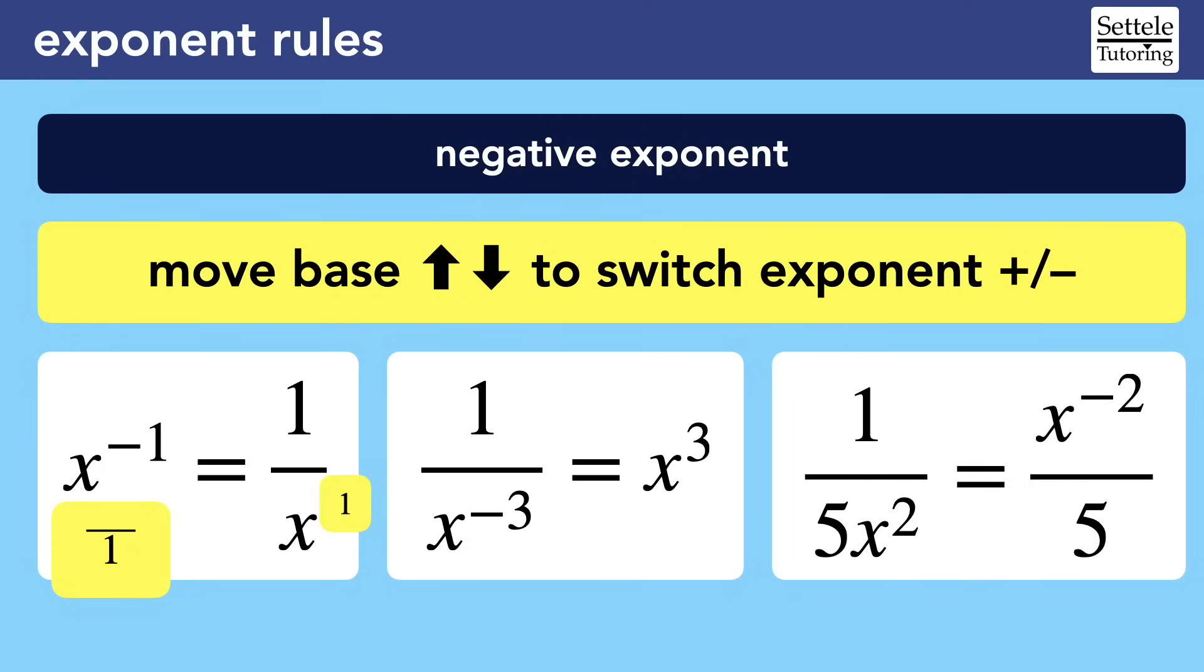In this final example, we start with a positive 2 exponent on the base of x. Following the rule, we can move the base from the bottom to the top and change the exponent from positive to negative. Notice that the 5 does not move with the x. That's because the exponent was not attached to the 5. So we only make changes to the exponent's base, which is x. The 5 has its own unwritten exponent of 1.